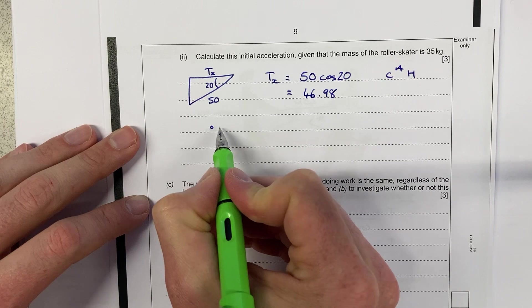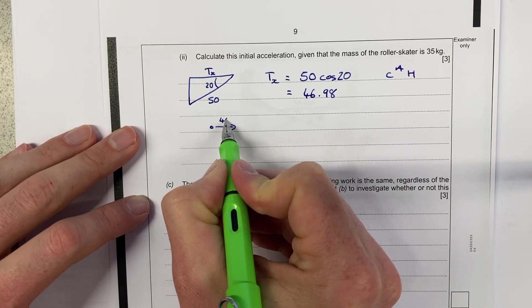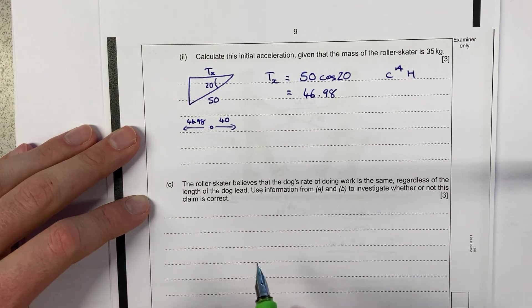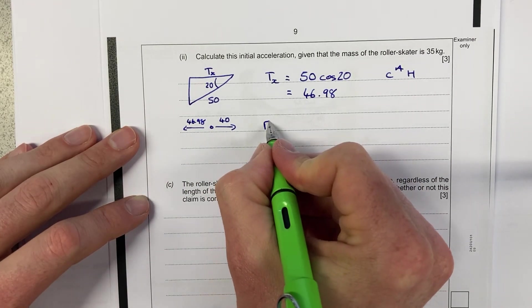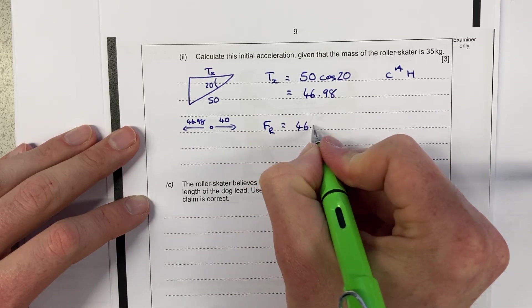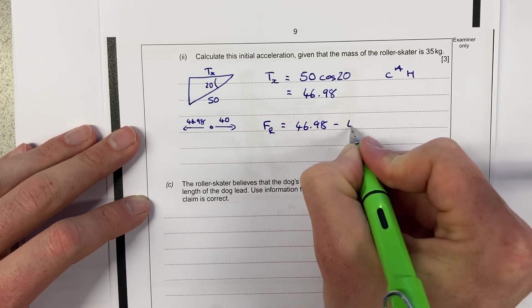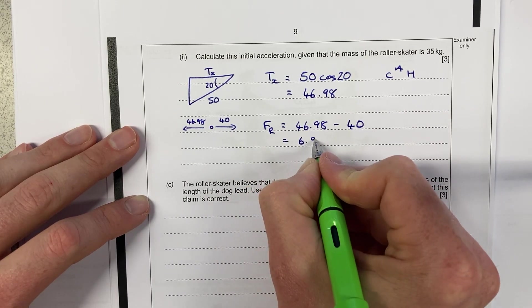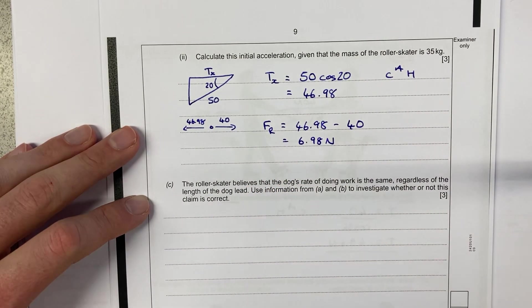Now, the force is acting on this person, so there's 40 pulling backwards. We've got 46.98 pulling in this direction, so the resultant force, FR, is equal to 46.98 minus 40 newtons. I'll do that one in my head, so that's going to be 6.98 newtons.